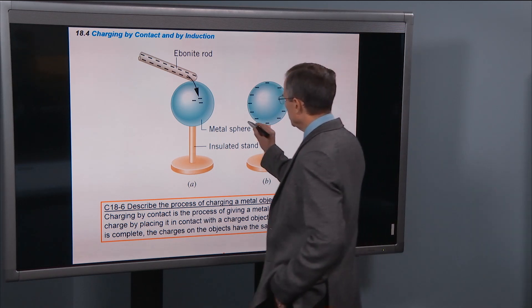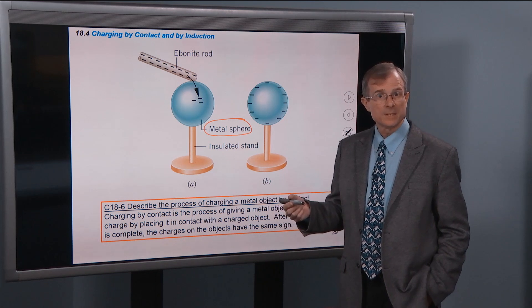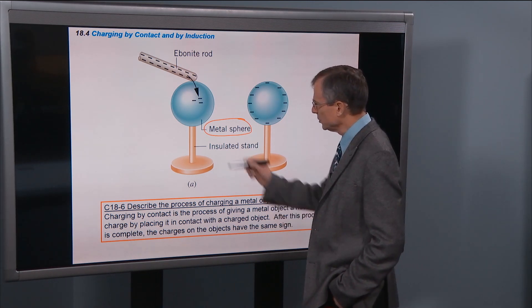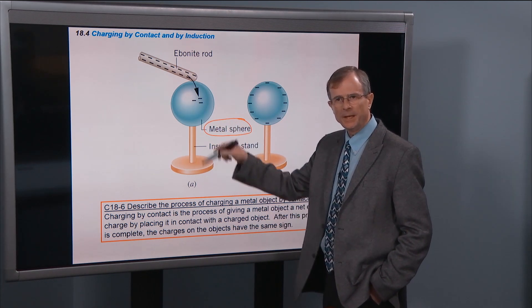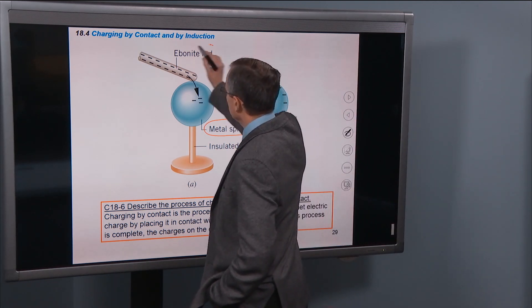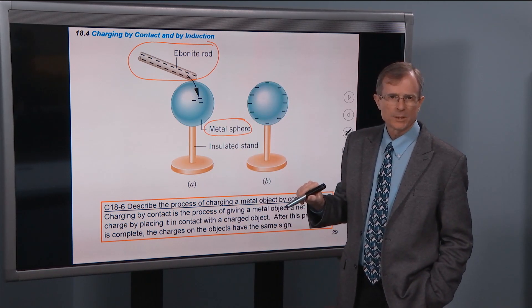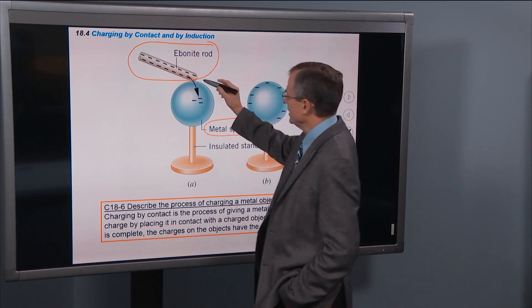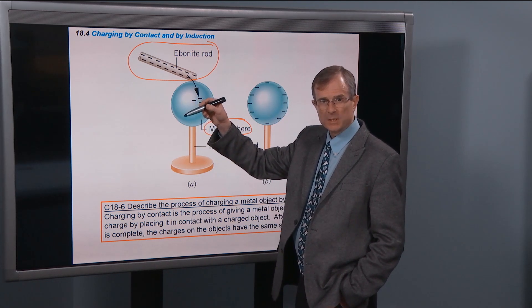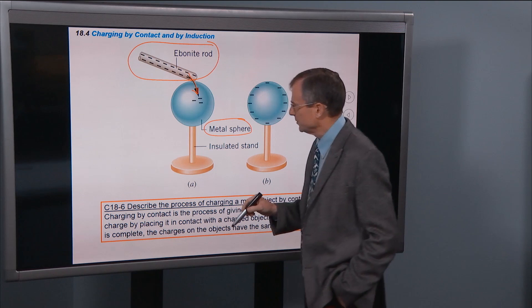So charging an object by contact. In this example we're going to be charging this metal sphere that's on an insulated stand. So no charge can bleed down from the sphere. If we take a negatively charged ebonite rod, for example, and we touch the metal sphere, then some of those excess electrons on the ebonite rod will bleed over onto the sphere.